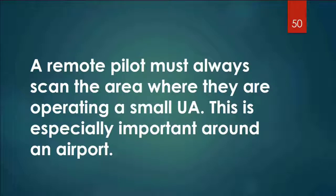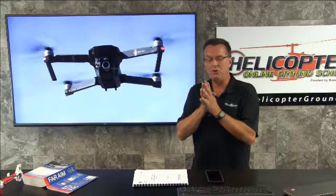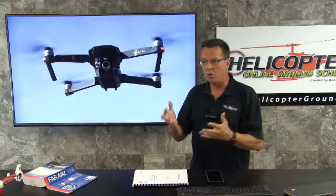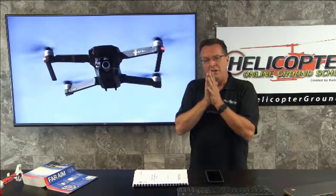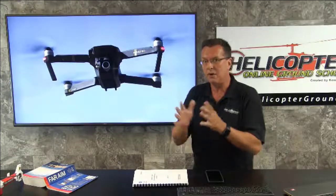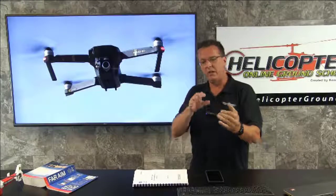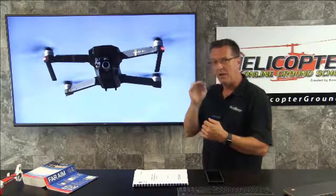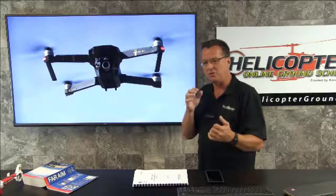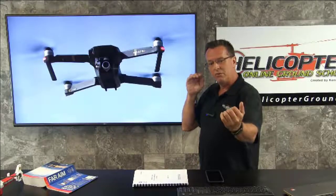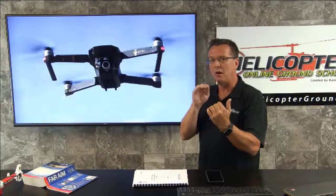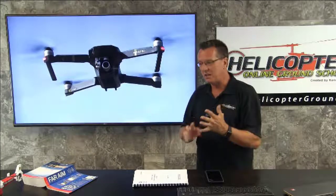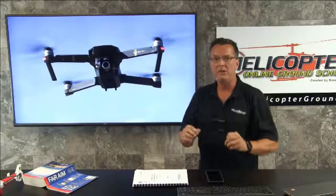A remote pilot must always scan the area where they are operating a small unmanned aircraft — this is especially important around an airport. You really have to use caution when in the vicinity of an airport because you'll have more traffic. I recently saw a video where a drone was coming at a helicopter flying at about 100 to 120 knots. The drone might have been going 30 or 40 knots, but the small unmanned aircraft is so small that the helicopter pilot doesn't see it until it's almost on top of them — it just comes out of nowhere. It is your duty as the remote pilot to understand all these things and make sure you stay safe.